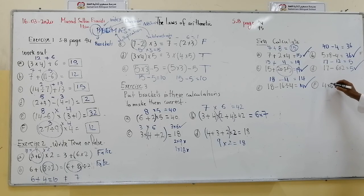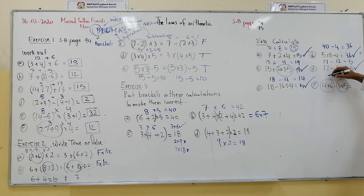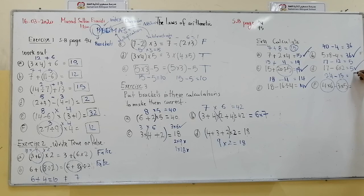The next one: I calculate the product of 6 and 4, then the product of 3 and 5, then subtract. 6 by 4 is 24; 3 by 5 is 15. 24 minus 15 is 9. The answer is 9.